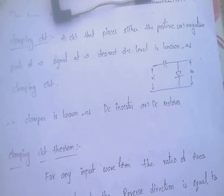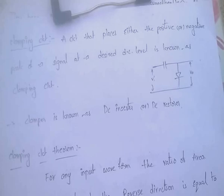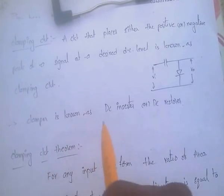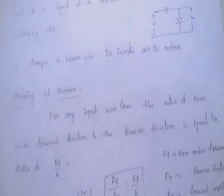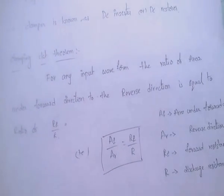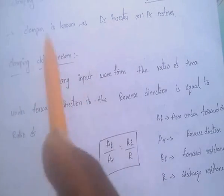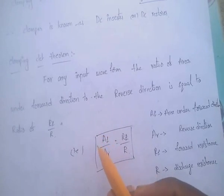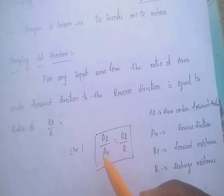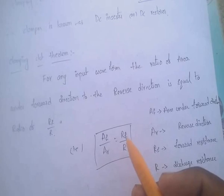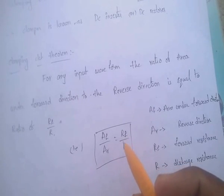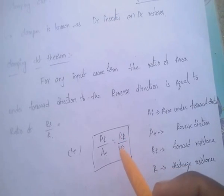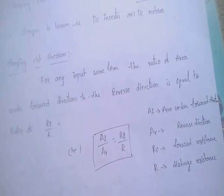Clampers are also known as DC Inserter or DC Restorer. The clamping circuit theorem states: for any input waveform, the ratio of the area under the forward direction to the area under the reverse direction equals the ratio of RF (forward resistance) to R (discharge resistance).